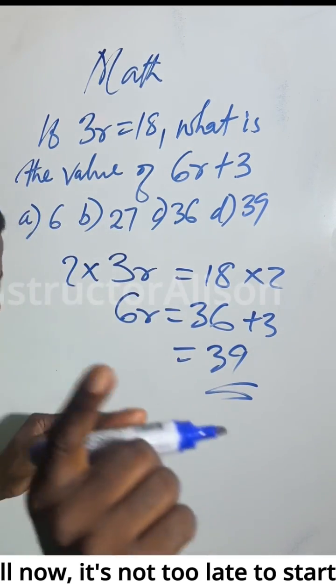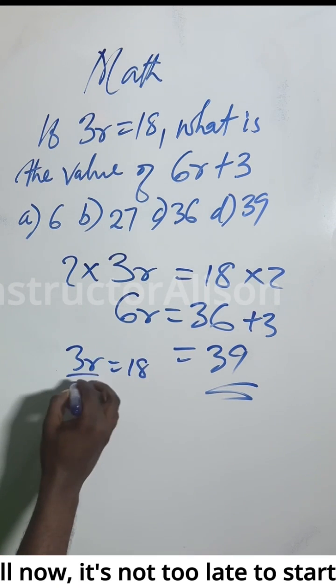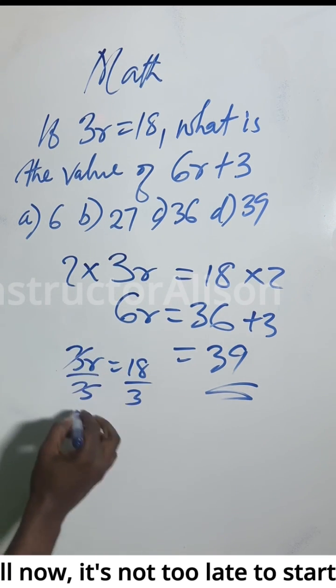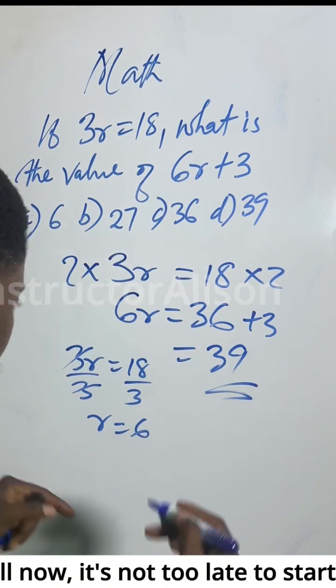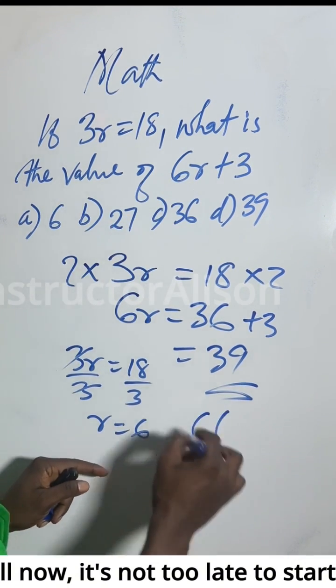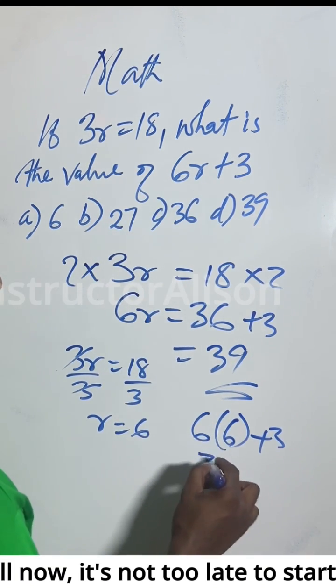Some people will say 3x equals 18, divide by 3 on both sides, this will cancel to get x equals 6. Then for 6x plus 3, they'll say 6 times 6 plus 3.